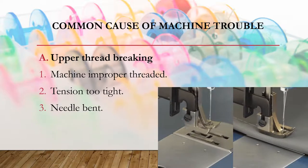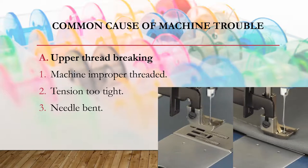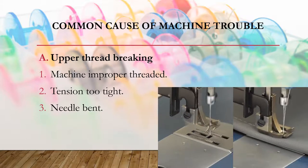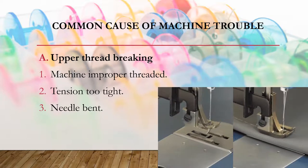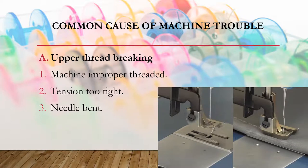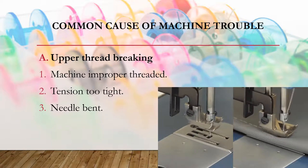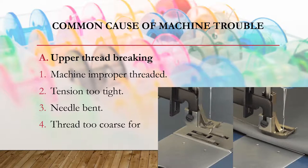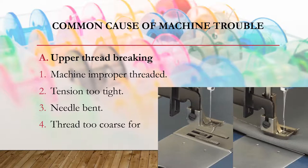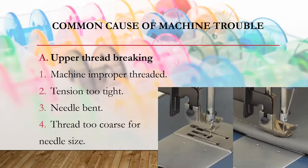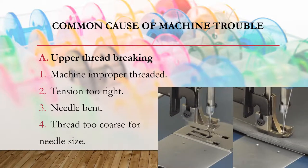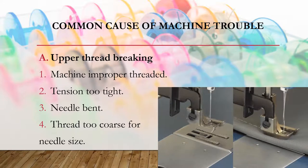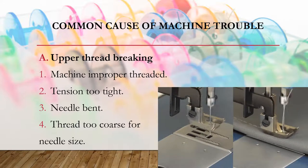Another cause of upper thread breaking is a bent needle. If the needle is bent, you need to change the needle to avoid upper thread breaking. Another cause is the thread being too coarse for the needle size. The thread should match the needle size so that you can avoid upper thread breaking.